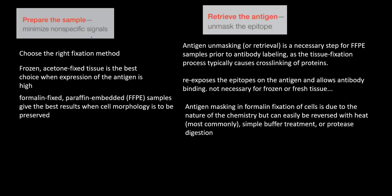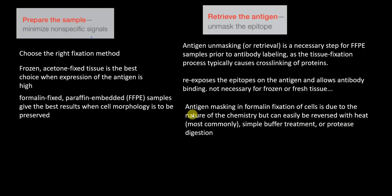Antigen masking in formalin fixation is due to chemistry but can be easily reversed. Antigen retrieval can be done by heat — the most common method — using temperatures of approximately 95–96 degrees Celsius. Other approaches include simple buffer treatments or protease digestion. These are the main methods used for antigen retrieval.